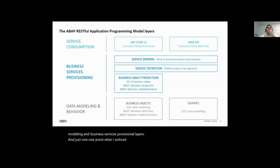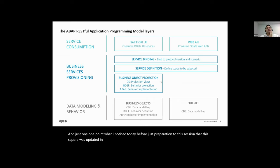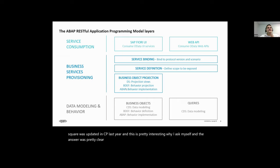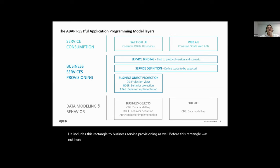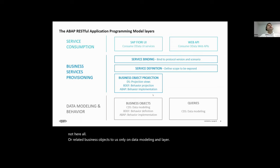Before this session I noticed this diagram was updated in SAP last year. The reason is that some code in ABAP and some code and comments in business definitions or in the CDS views affect all data services. That's why SAP now includes this rectangle in the business service provisioning layer — before, all related business objects were only on the data modeling and behavior layer.